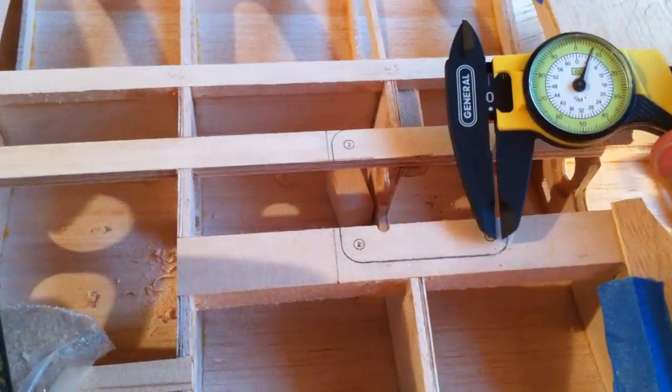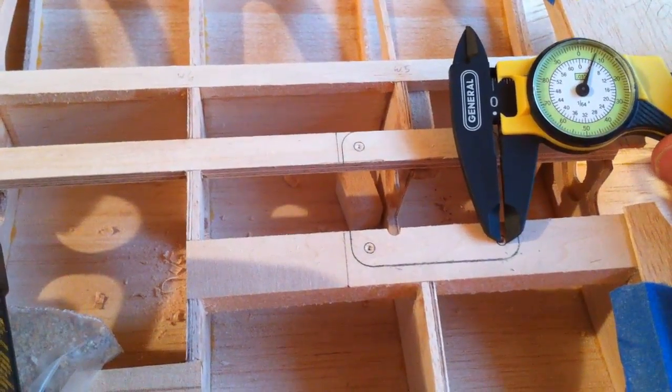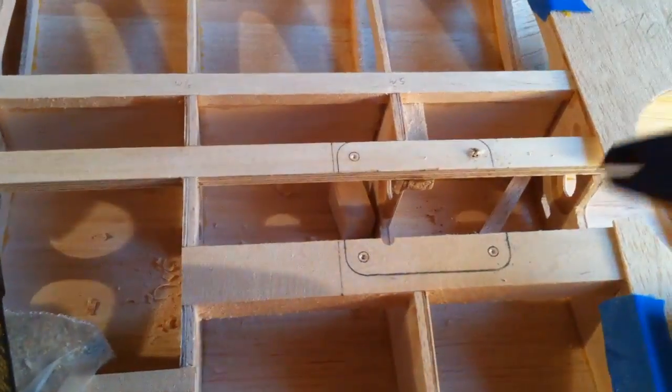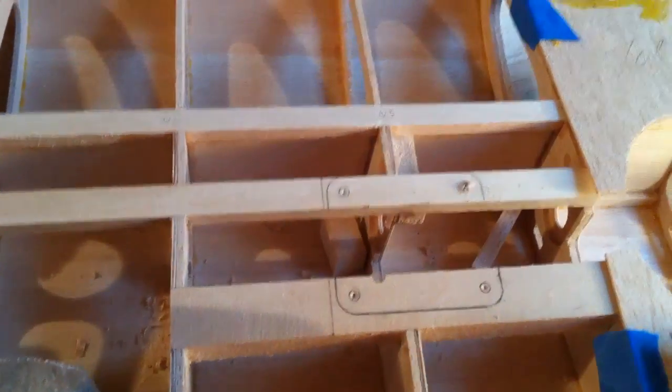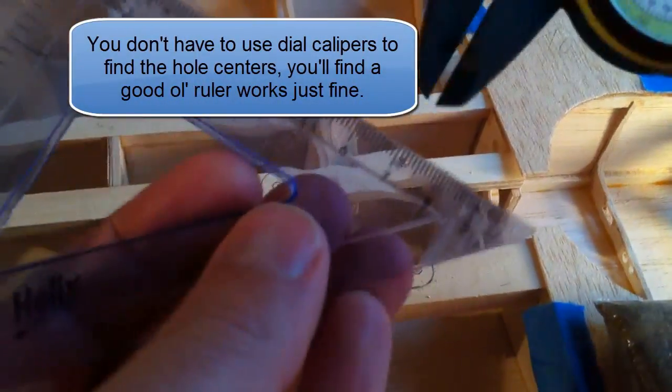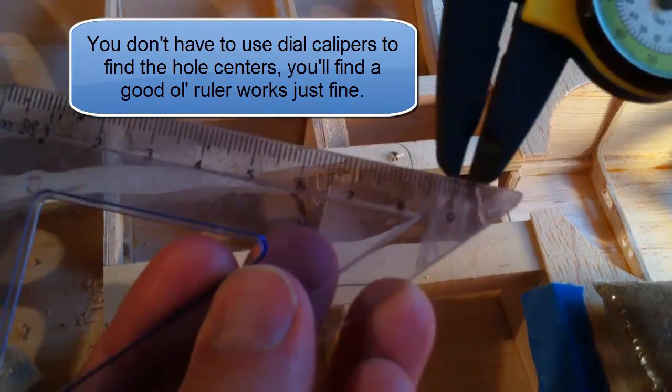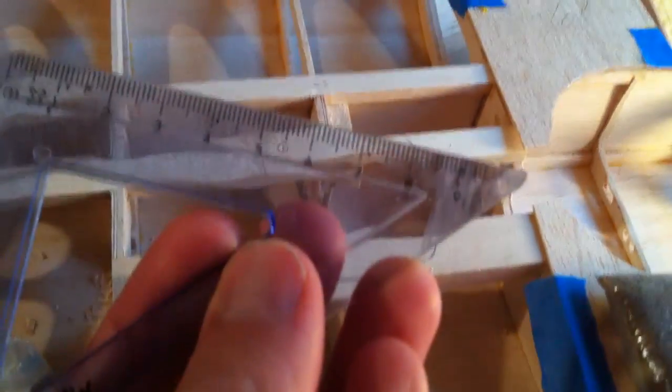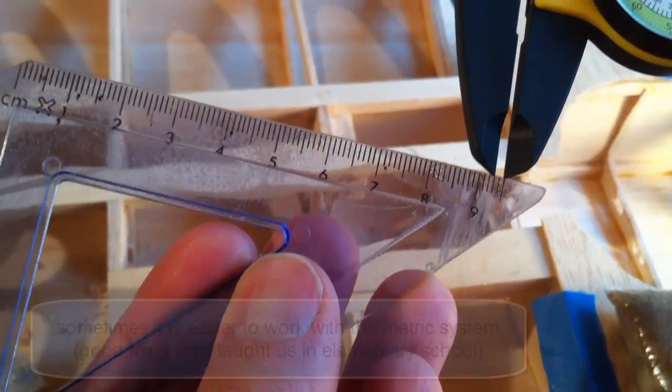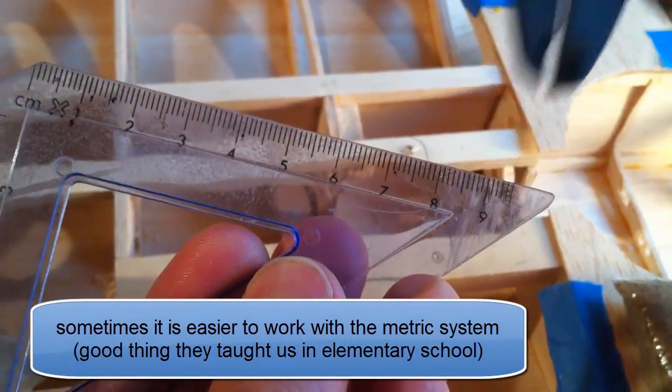First I measured the size of the holes and divided that by half to get the center line for each hole. Then I verified what it would be on my ruler in millimeters and it's four millimeters for each hole.